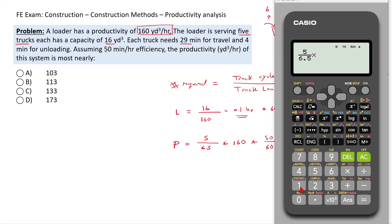And that is 5 divided by 6.5, multiplied by 160, multiplied by 50 over 60. And that is 103 cubic yards per hour, which is answer A.